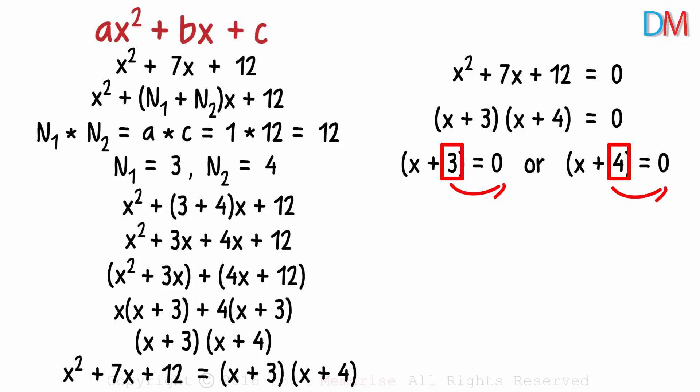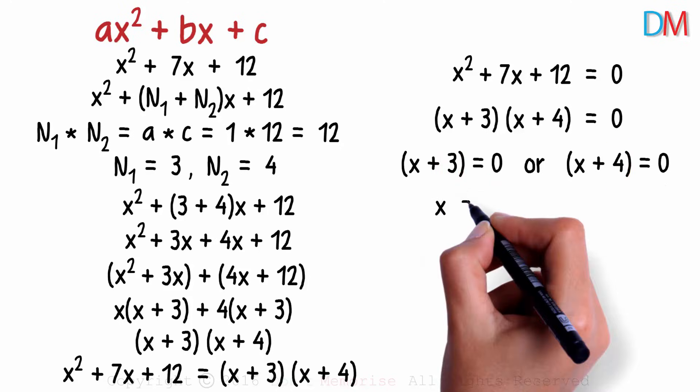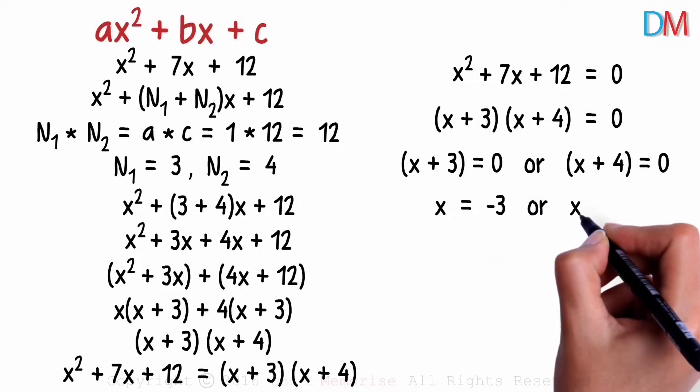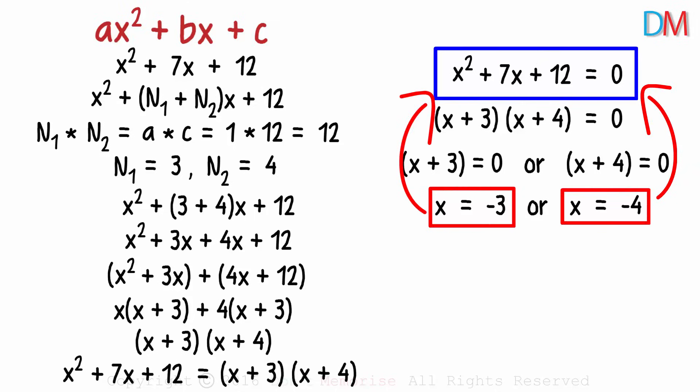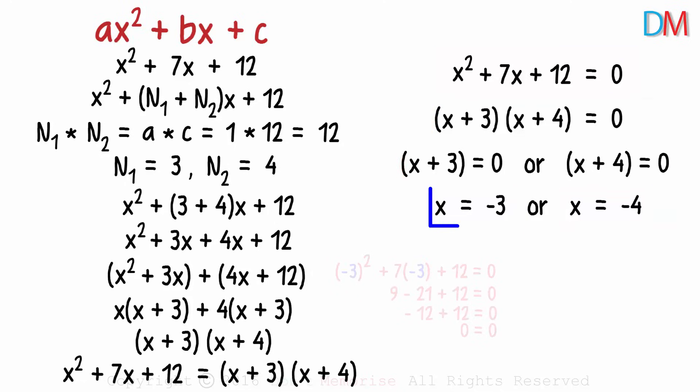Transposing the constants to the right, we can say that x equals negative 3 or x equals negative 4. These are the roots of this quadratic equation. If you substitute any of these values in this equation, you will see that the equation is satisfied. If we substitute negative 3 in place of x, we get a 0. And it's the same with negative 4. These two are the roots of this quadratic equation.